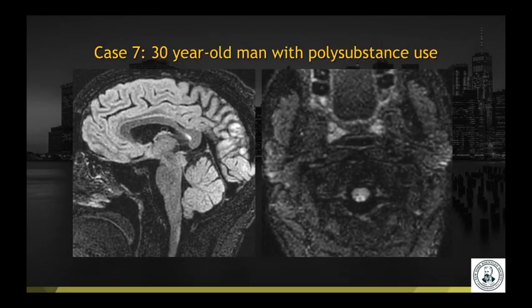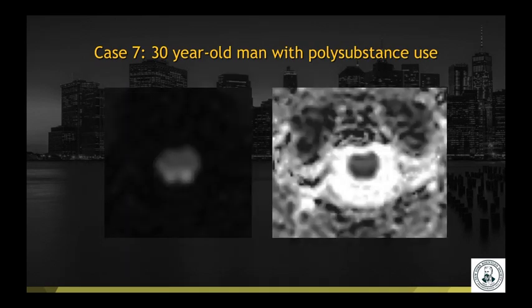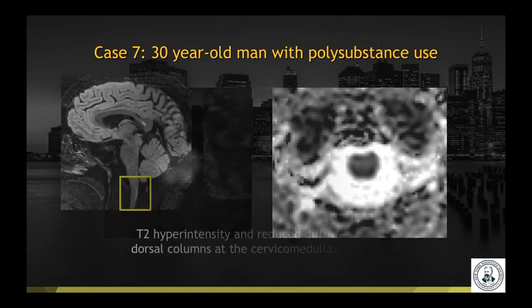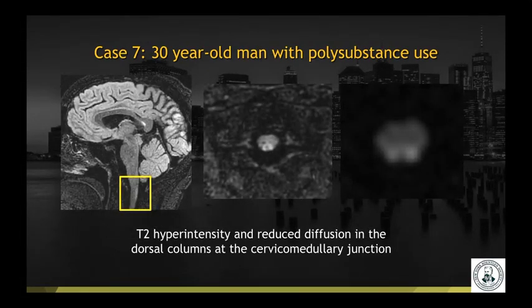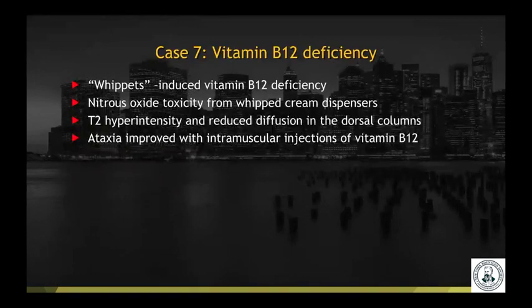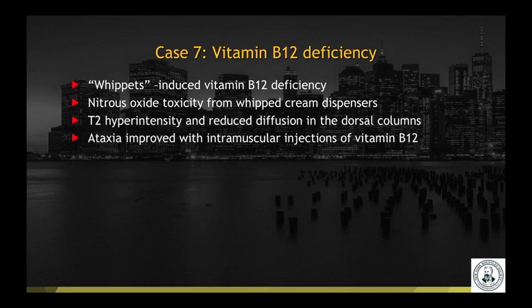Case number seven: a 30-year-old man with polysubstance use. Sagittal and axial T2 FLAIR images and diffusion with ADC map demonstrate T2 hyperintensity and reduced diffusion in the dorsal columns at the cervical-medullary junction. This was a case of vitamin B12 deficiency, in this case induced by whippets — nitrous oxide toxicity from inhaling whipped cream dispensers. Classically, you get this T2 hyperintensity and reduced diffusion in the dorsal columns. Patients often present with ataxia, which improves with intramuscular injections of vitamin B12.